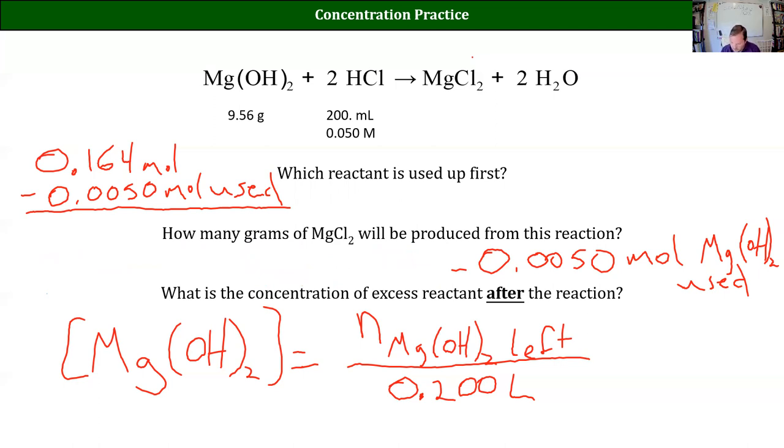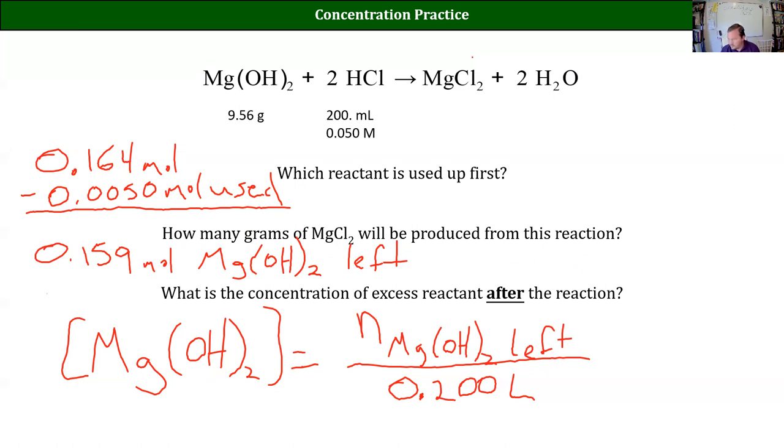So we get 0.159 moles magnesium hydroxide left. So to get our final concentration of the excess reactant, we're just going to plug that number in on the top here. We get something a little under 1, I believe, 0.159 over 0.2.